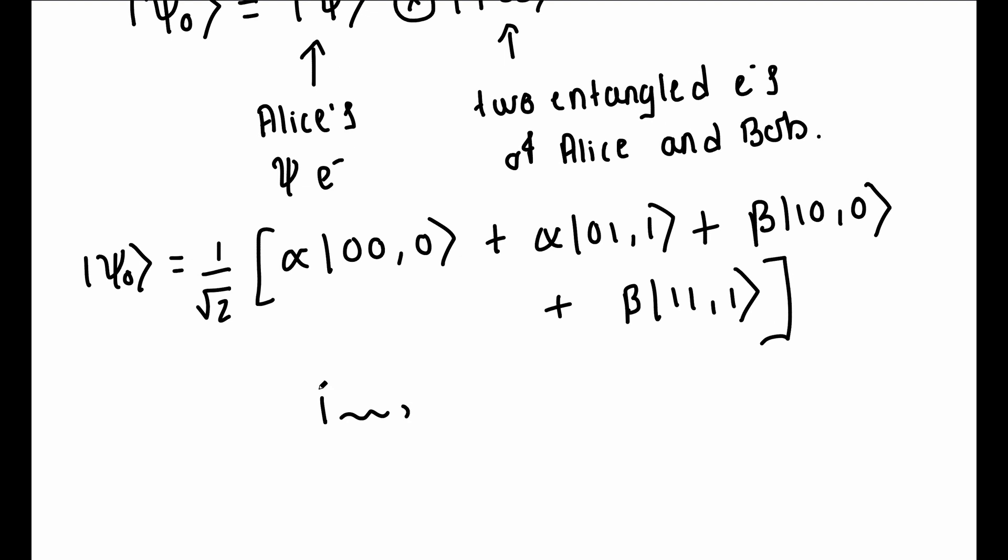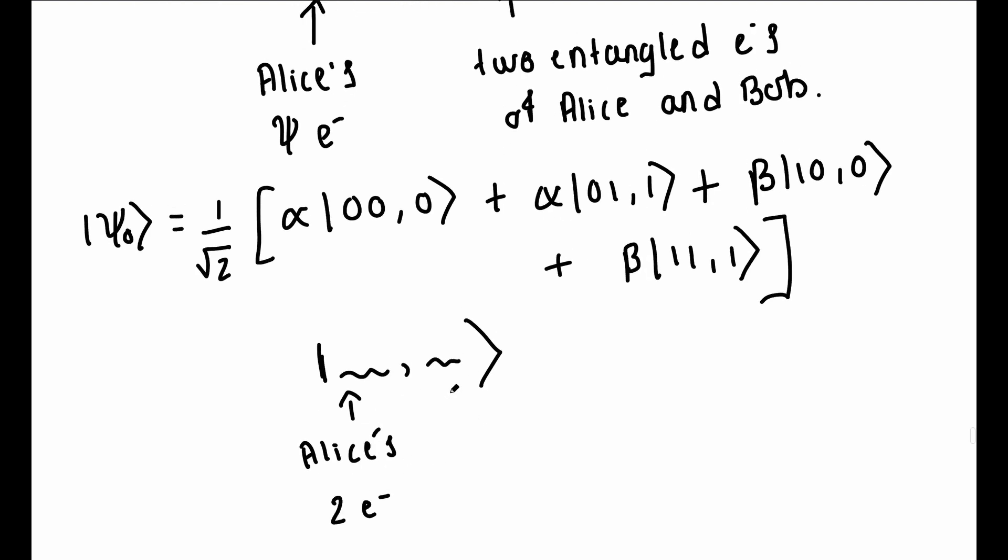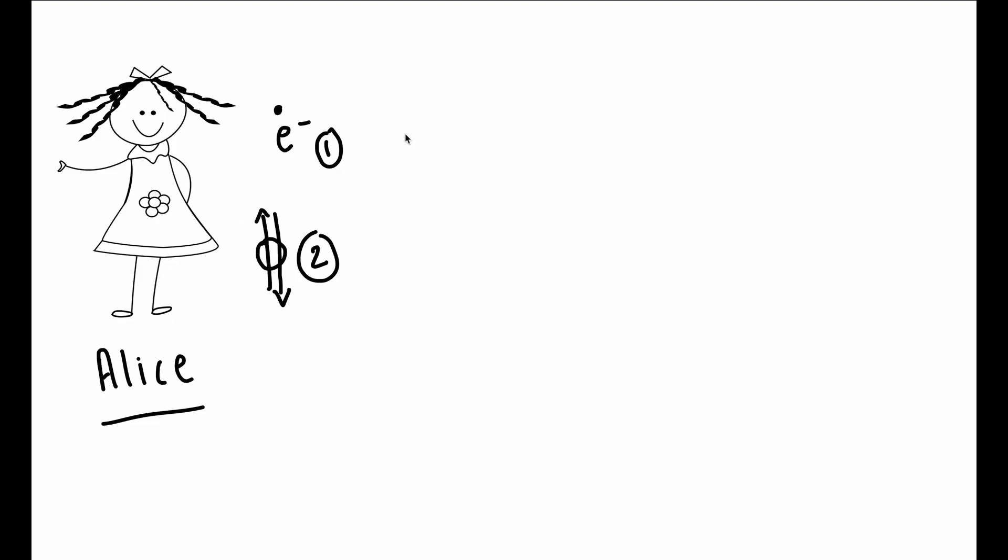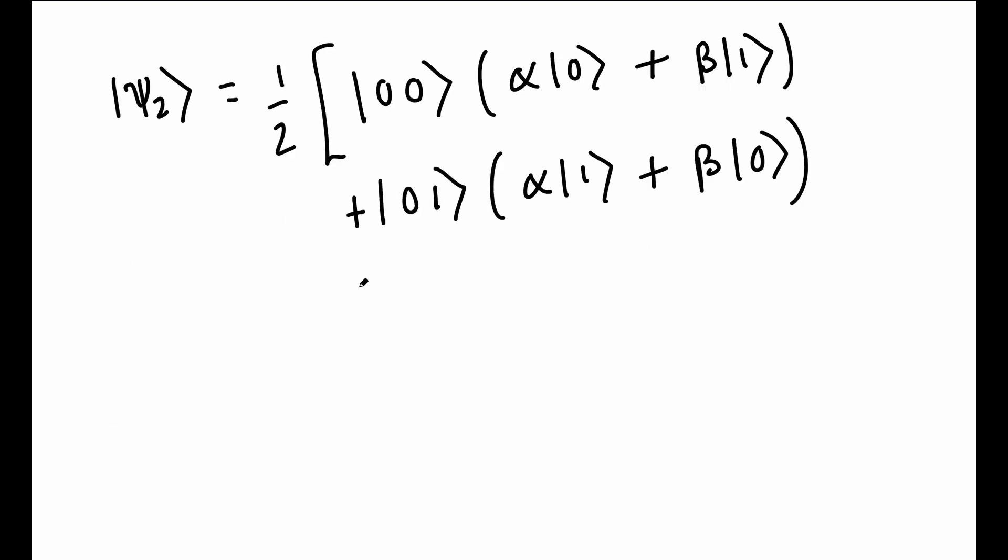Then Alice sends her two qubits through a CNOT gate, which gives the state ket psi 1. Alice then sends her first qubit through the H gate to get the state ket psi 2. After evaluating, we get four terms for ket psi 2.